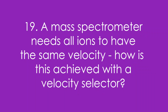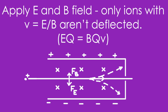Question 19: The mass spectrometer needs all ions to have the same velocity. How is this achieved with a velocity selector? We apply both an electric and a magnetic field so the ions feel both. If they're going too slow they deflect downwards; too fast and they deflect upwards. Only ions where the electric and magnetic forces are balanced go straight through. So EQ = BQV, which gives speed = electric field strength divided by flux density, E/B.